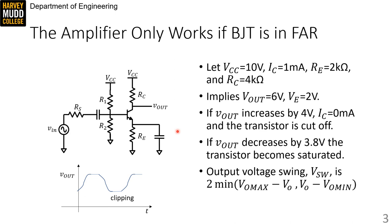For instance, in our example, VOUT can travel upwards by 4 volts before cutoff, but only 3.8 volts downwards before saturation. Therefore, V-swing would be 2 times 3.8 volts, or 7.6 volts.